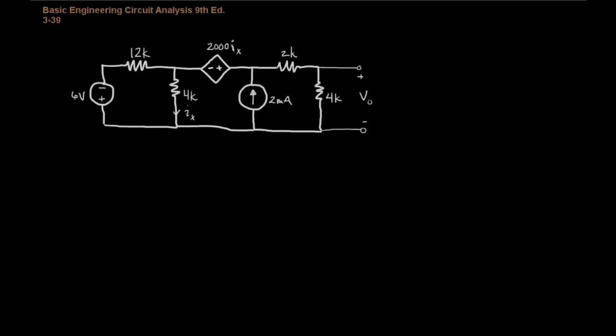Okay, so the first thing that we'll do is we'll select our ground node. And then we'll label our voltages, our node voltages. So we have V1, since we already have V0 in the drawing.